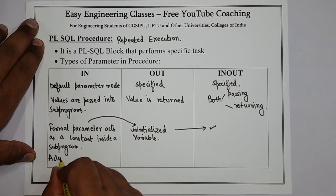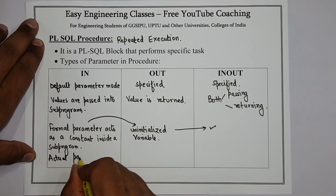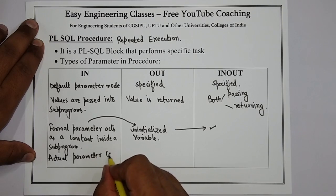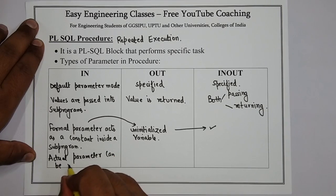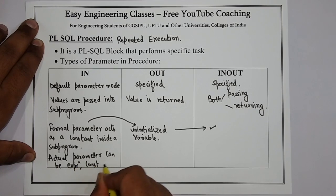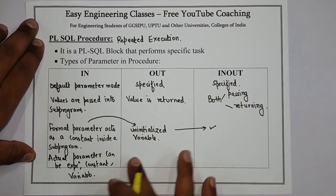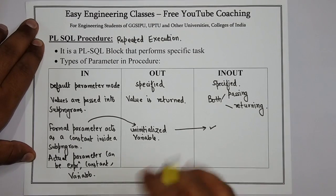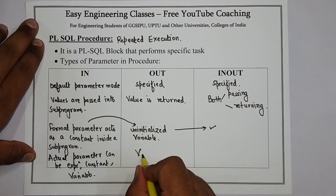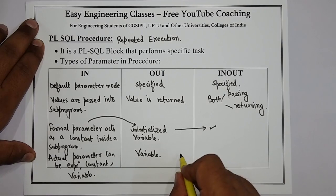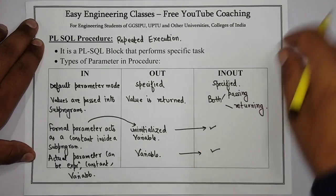In IN-OUT also, it acts as an initialized variable — so it is the same for OUT and IN-OUT. For the actual parameter, in IN mode it can be anything like an expression, a constant, or an initialized variable, whereas in OUT and IN-OUT the actual parameter must be a variable, which is used to return the value.